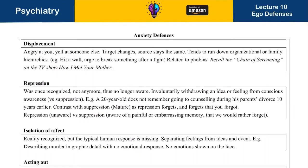Next we have anxiety defenses — these help you avoid anxiety. The first is displacement: emotions are shifted to another person in the same way that resembles the original emotion. If you are angry at your boss but can't take it out on the boss, you take it out on someone else. The target changes but the anger stays the same. This is usually seen in organizational or family hierarchies.